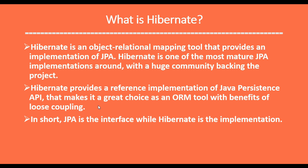Loose coupling here means that whenever we want to swap the underlying implementation of JPA, we can just switch from Hibernate to EclipseLink. There are multiple JPA implementations — for example Hibernate, EclipseLink, OpenJPA, TopLink, etc. So whenever we want to change the implementation, we can just switch from Hibernate to EclipseLink or other implementations. That is loose coupling. In short, JPA is the interface while Hibernate is the implementation.